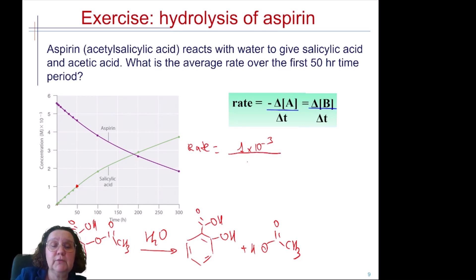So 1×10⁻³ divided by 50 which is the time period. And if I do this calculation it's 2×10⁻⁵ mols per liter per hour.